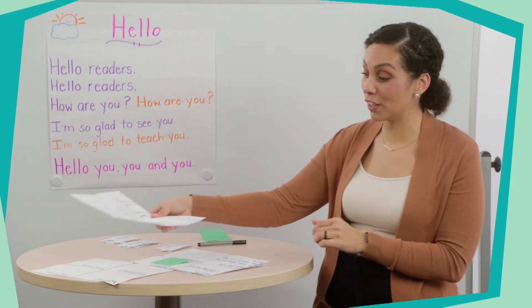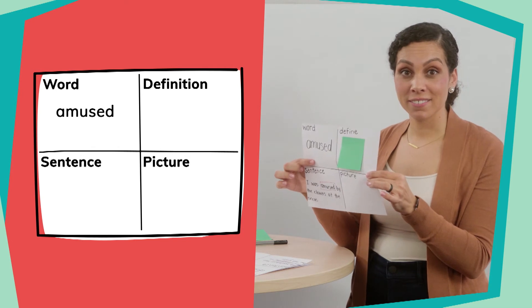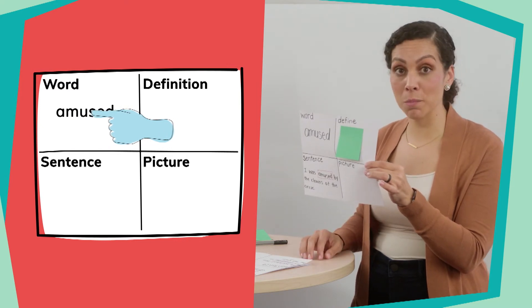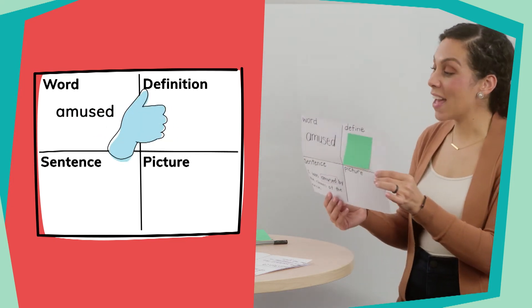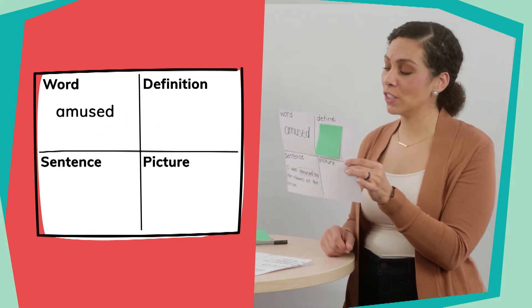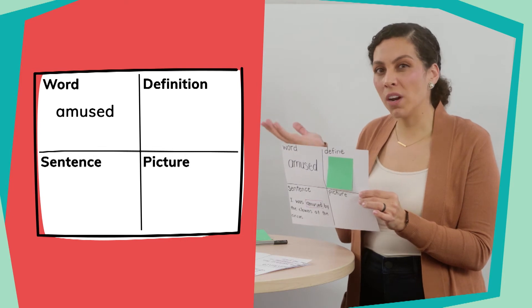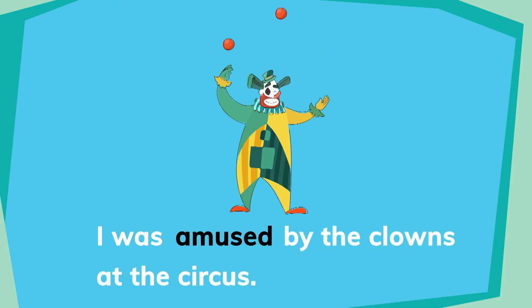So wonderful job, and you even filled out your Frayer model to help you stay organized with learning your new vocabulary words. Our next word is 'amused.' Can you write the word amused in the word section of your Frayer model organizer? I'm going to use the word amused in a sentence and you're going to figure out what you think it means. I was amused by the clowns at the circus. Take a moment and write that sentence down and think about what it means.